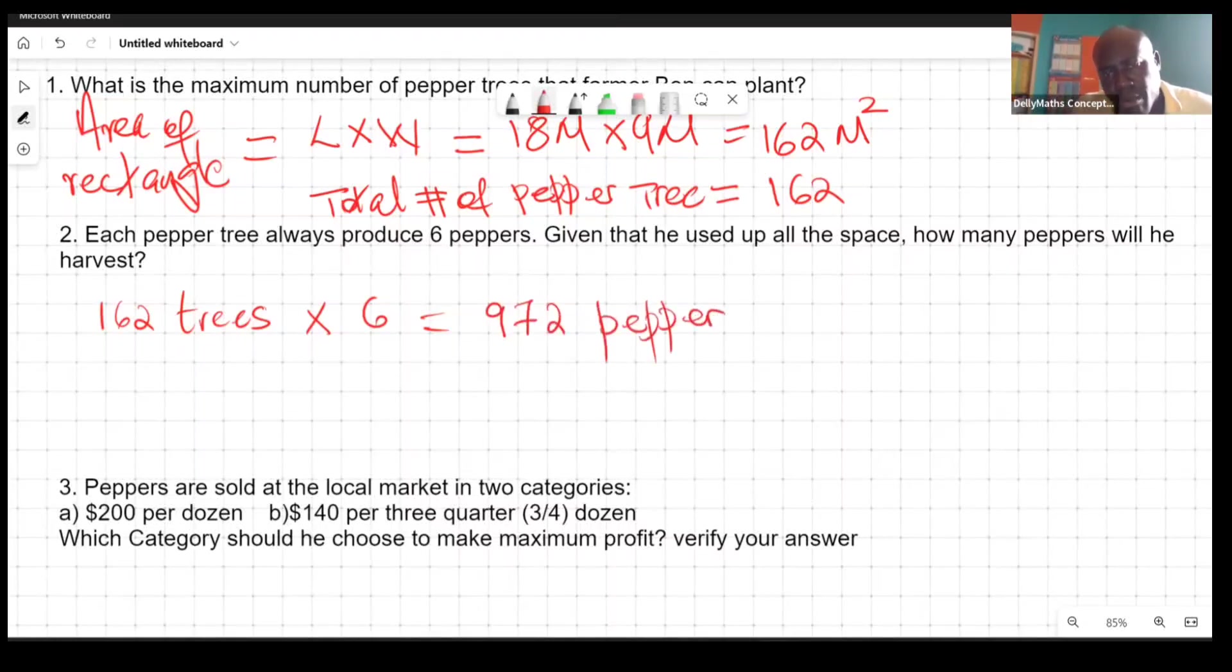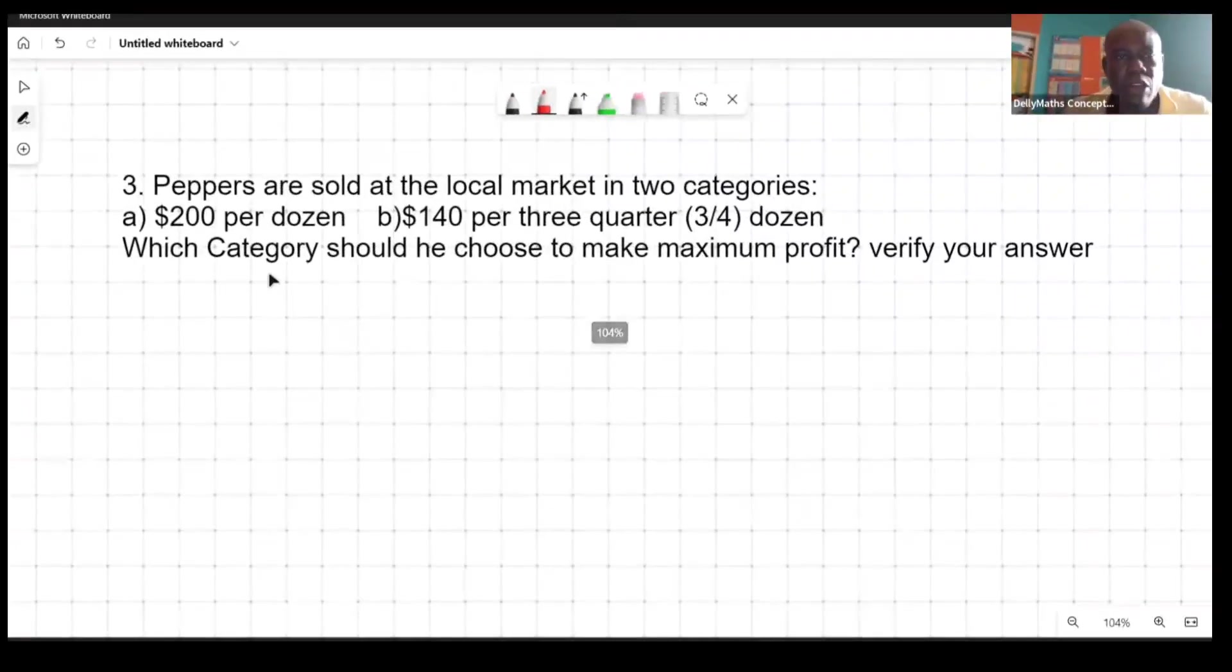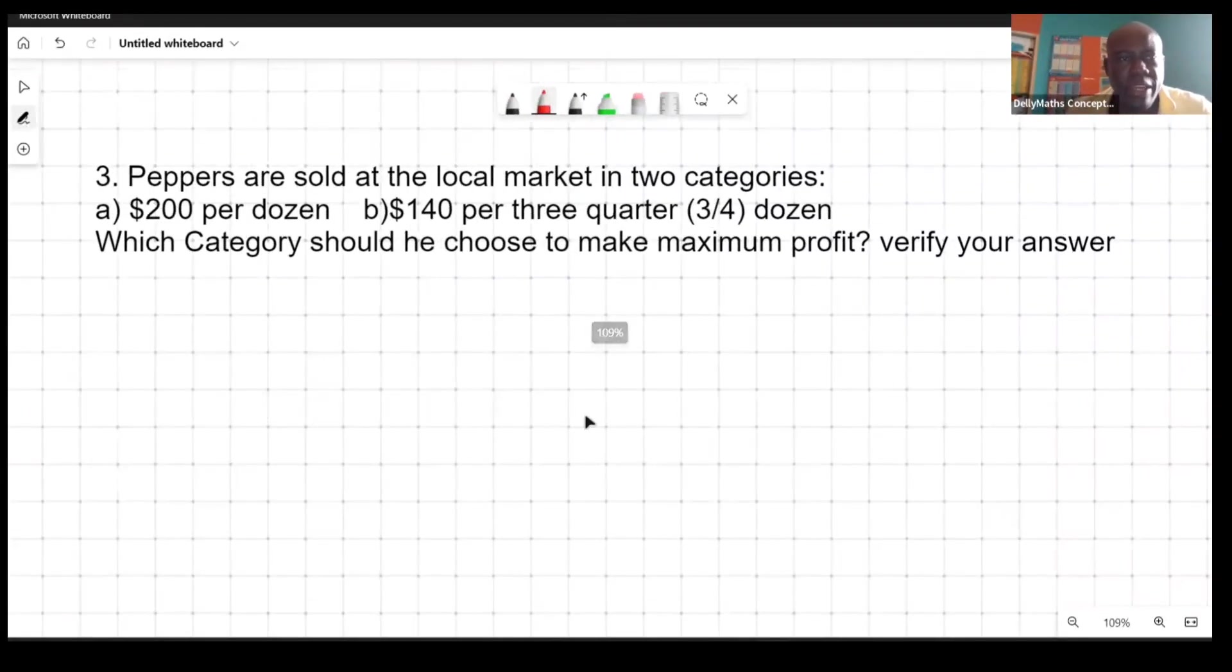You will be picking 972 peppers ready to be sold. Peppers are sold at the local market in two categories: category A is $200 per dozen, category B $140 per three quarters of a dozen.